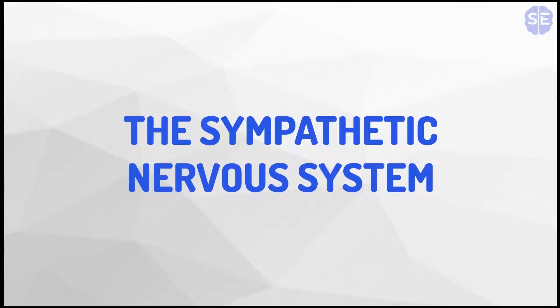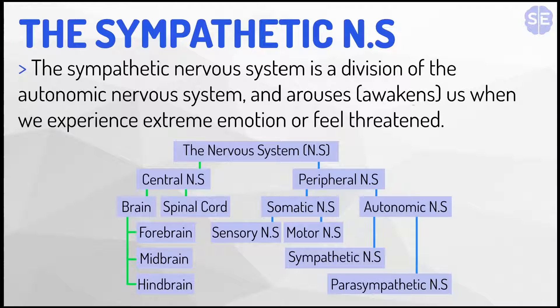We'll first begin with the sympathetic nervous system. The sympathetic nervous system is a division of the autonomic nervous system and arouses us when we experience extreme emotion or feel threatened.